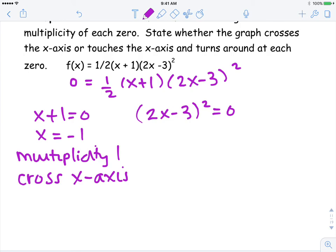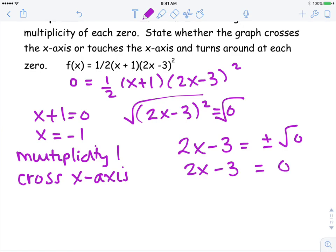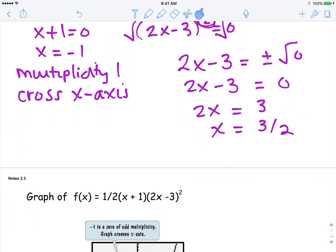Okay, let's go to the second equation. We're going to undo it. So we're going to square root both sides. Plus or minus the square root of zero is still zero. Then we're going to add three to both sides. And then divide by two. Now notice this is squared. So we actually have two of them. So this is a multiplicity two, which is even. So that's telling us it's going to bounce off.